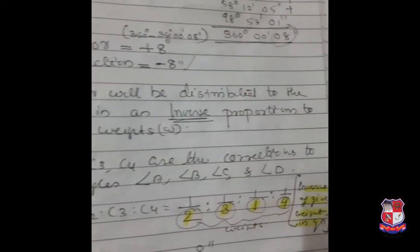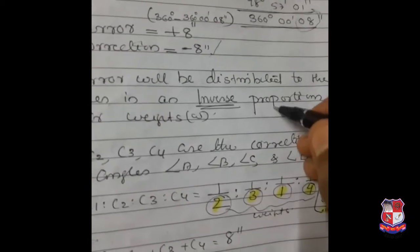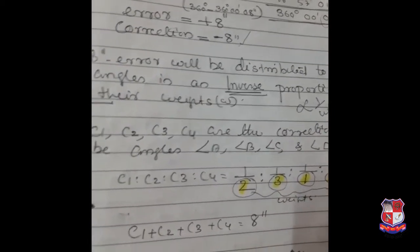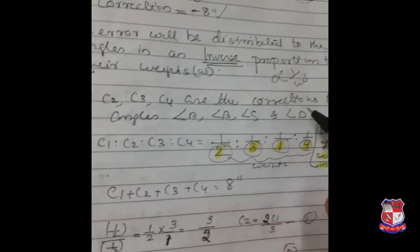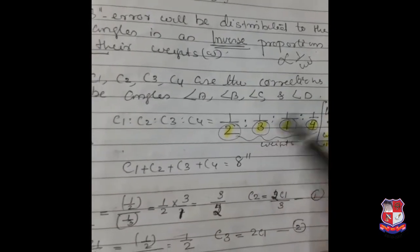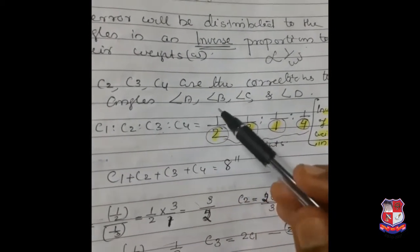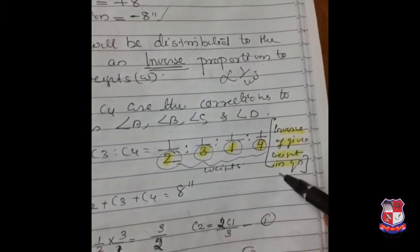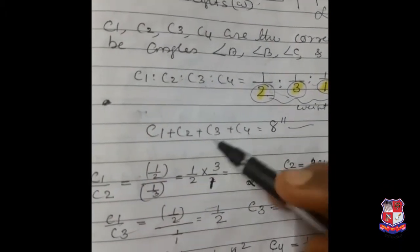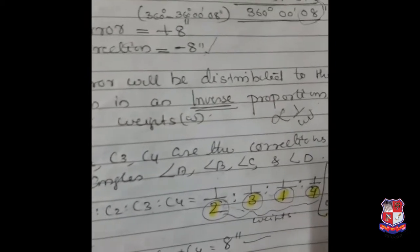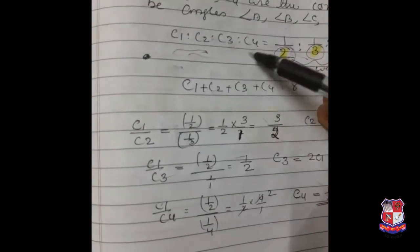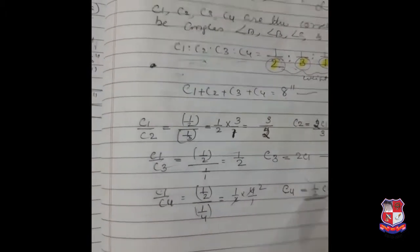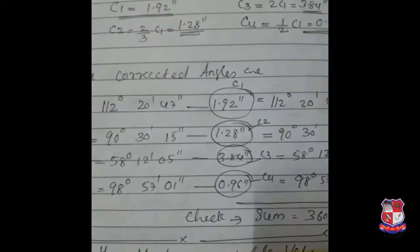The 8-second error will be distributed to the angles inversely proportional to the weight of their angles. Same procedure: C1, C2, C3, C4 are the corrections to be applied for A, B, C, D. C1 : C2 : C3 is equal to 1 by W — inversely proportional to the weight, which is given in the question. The sum of all corrections equals 8 seconds. Equate and find out the values of C1, C2, C3, and C4.